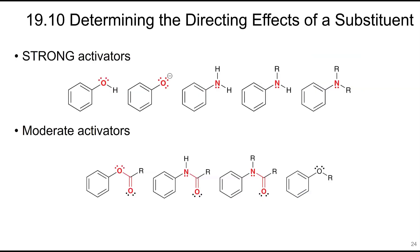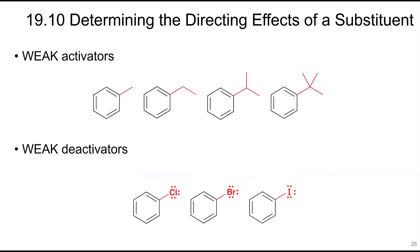Strong activators have electron lone pairs that they can donate into the ring with not much else withdrawing. For example, an NH₂ group has a hydrogen and lone pairs to donate, NR₂ has three electron pairs and alkyl groups that donate inductively through the nitrogen lone pair and into the ring. Moderate activators can also donate via lone pairs, but also have electron density being drawn out by carbonyls. Weak activators include alkyl groups, which can only donate through induction.